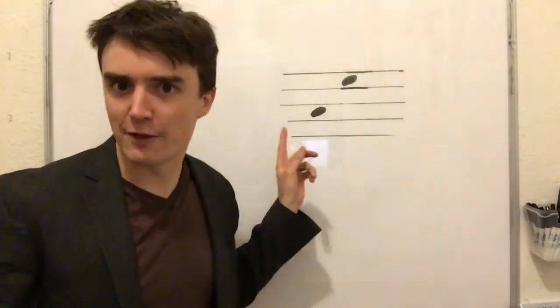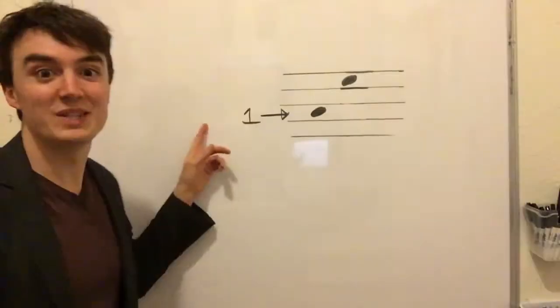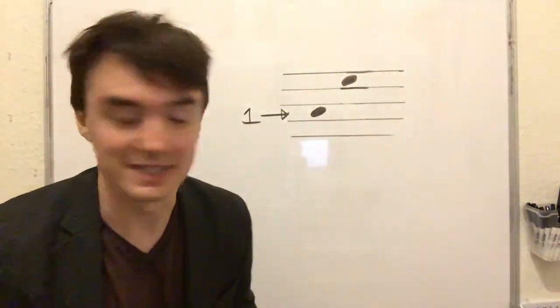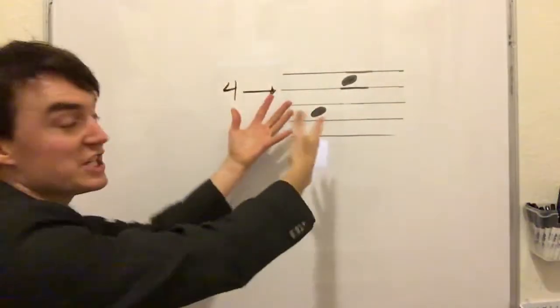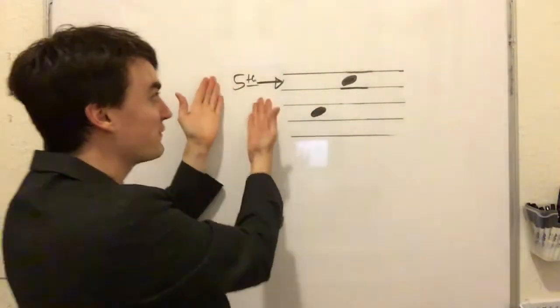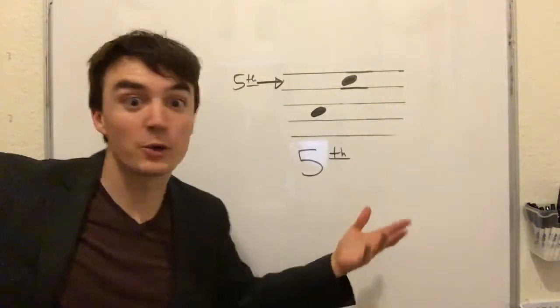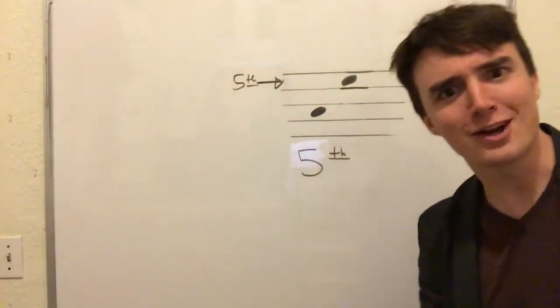It doesn't start on F, but the process is the same. We start counting on one. The next line is two. The next space is three. The next line is four. And the next space is five. That's where our note is. So it's a fifth. You could've done that.